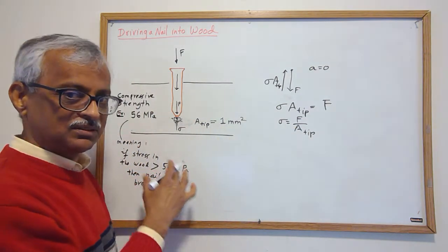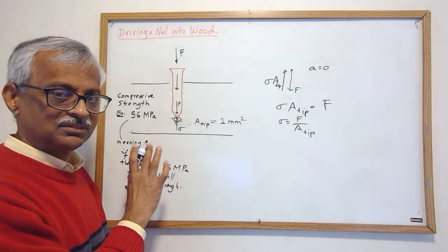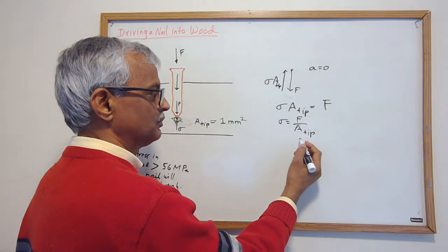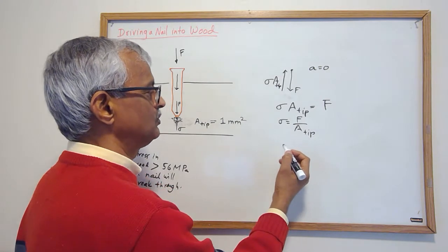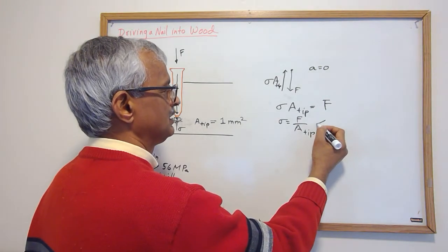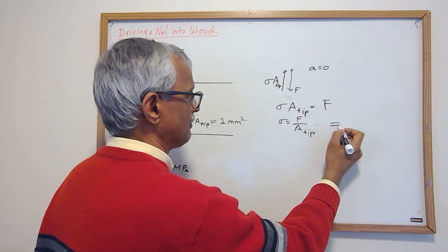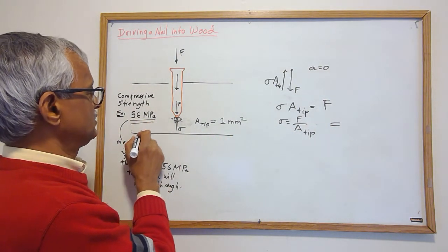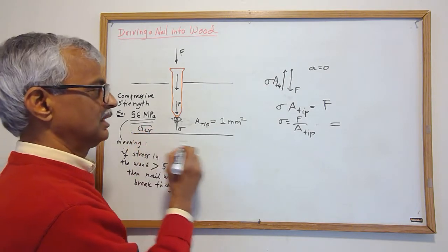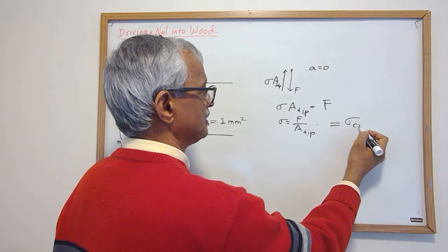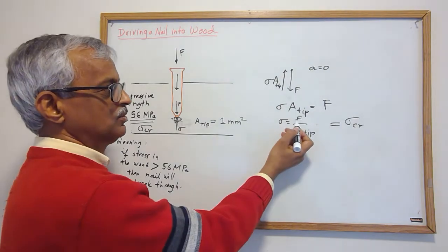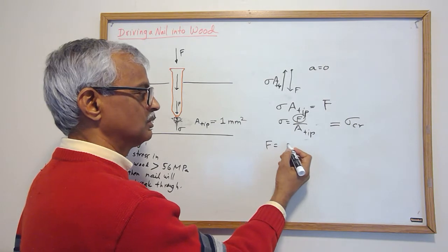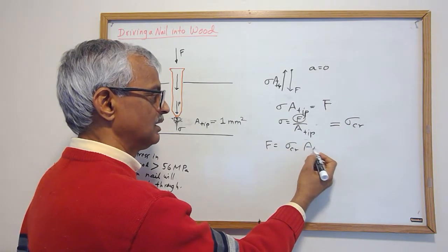Notice how this is very similar to the pressure calculation. This was like pressure times A_tip. So this should be equal to the strength. Let's call this sigma critical—it has to be equal to sigma critical.